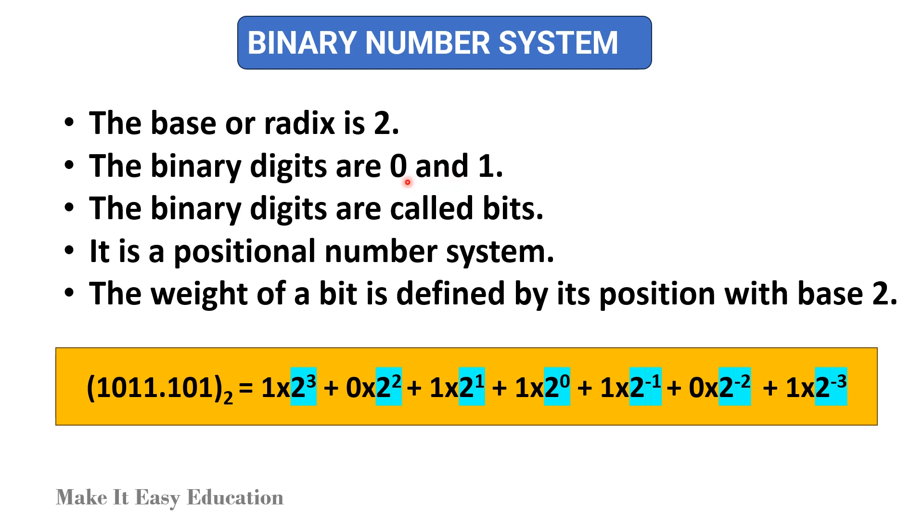In this example, starting from the binary point, the weights of different digits are 2. The digits in the integer part of a binary number are 2 power 0, 2 power 1, 2 power 2, and 2 power 3, and for the fractional part it is 2 power minus 1, 2 power minus 2, and 2 power minus 3.